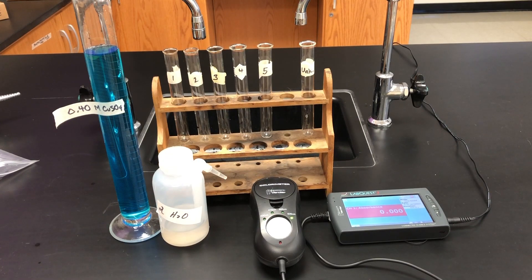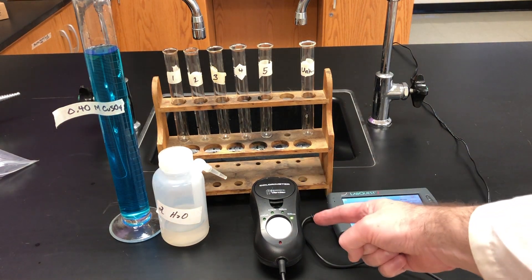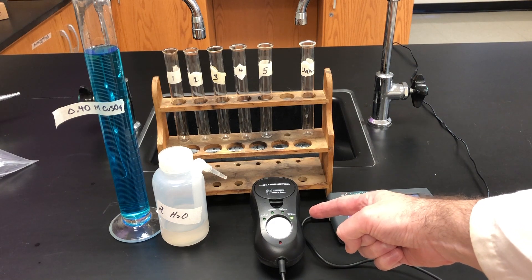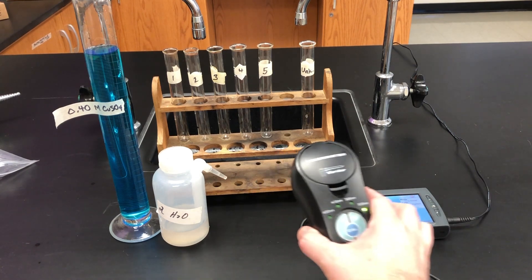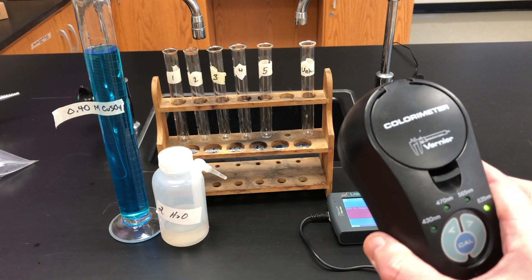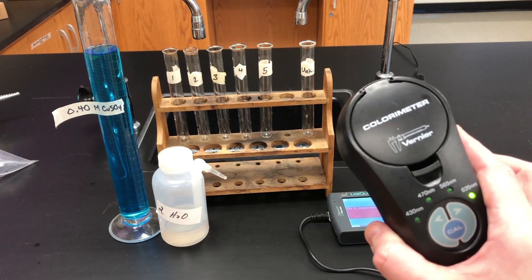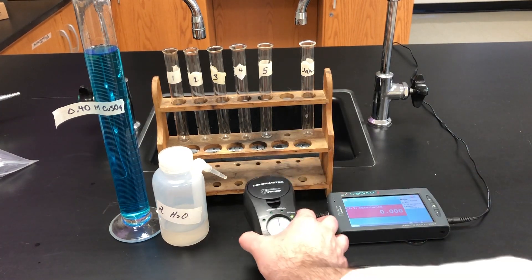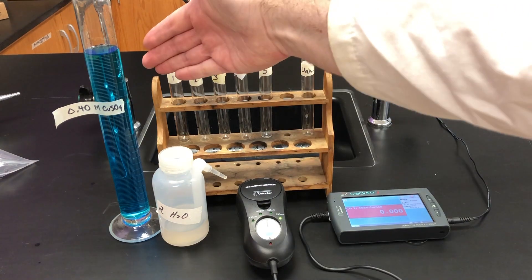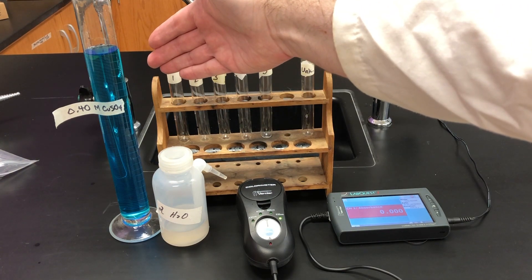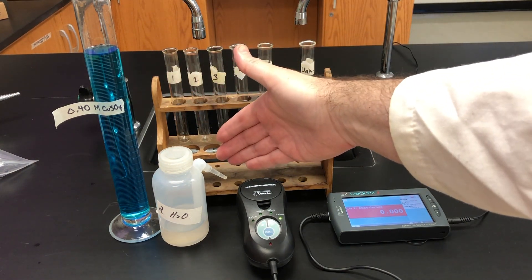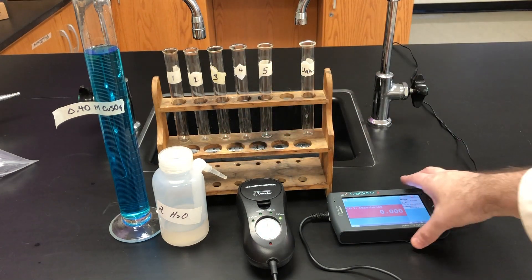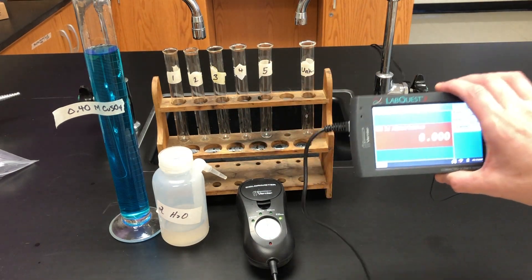What you see in front of you is a typical setup to complete a Beer's-Lambert's Law lab. There's a colorimeter right there, and as you can see, it's not that big. Inside of it is a square cuvette, and you can see it's set for 635 nanometers, which is red light. There's our copper sulfate solution, you can see it's blue. We have some distilled water to dilute the solutions, and that's our lab quest.